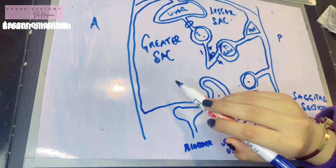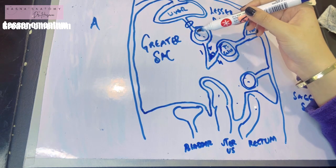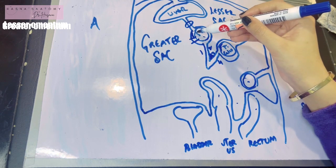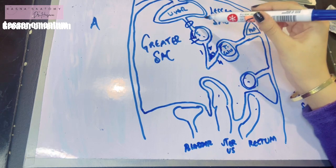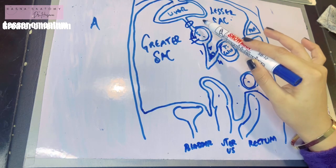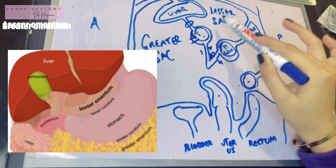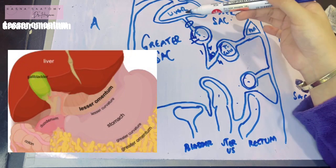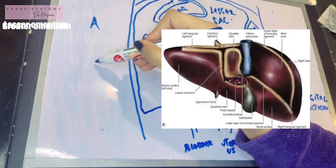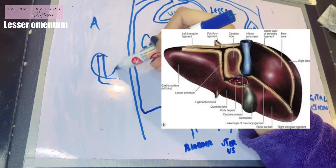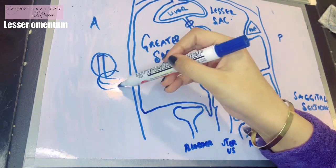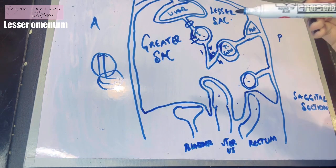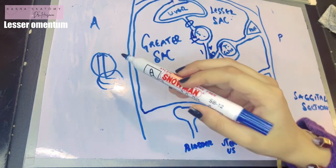The lesser omentum is the peritoneal fold running from the lesser curvature of the stomach — plus some part of the duodenum — up to the liver. So below it is attached to the lesser curvature of the stomach and to the beginning of the duodenum, and above it attaches to the liver. Its line of attachment to the liver is in the form of an inverted L-shape: the vertical limb is where the fissure for the ligamentum venosum lies, and the horizontal limb is the attachment to the margins of the porta hepatis.